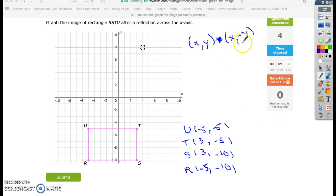Okay, so to get my new points, all I have to do is change my y when I'm reflecting over the x-axis. So I'm going to have U prime, T prime, S prime, R prime.